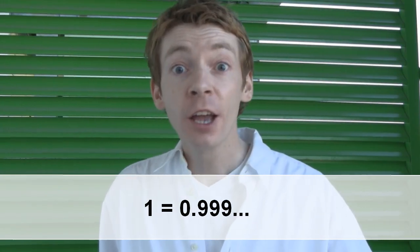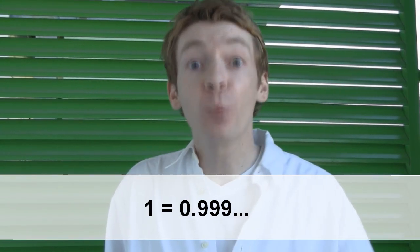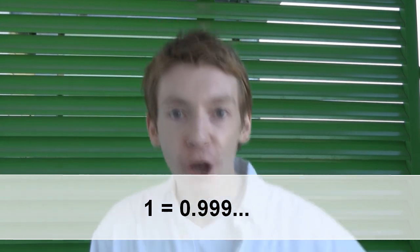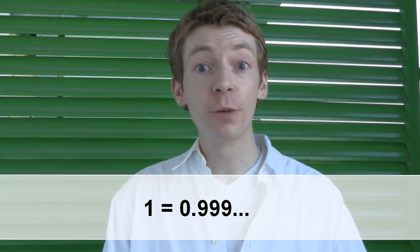when we write numbers decimally, sometimes we have more than one way to write the same number. So 0.999 recurring is just another way to write the number 1.